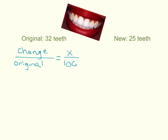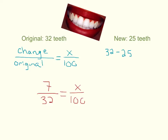I always make my change positive — it doesn't matter, but your final answer is never written as a negative percentage. So I keep it positive: the change is the larger number minus the smaller, 32 minus 25, which is a change of 7 teeth. She started with 32 teeth, and we want to find the percentage over 100. So cross multiply: 7 times 100 is 700, equals 32x.